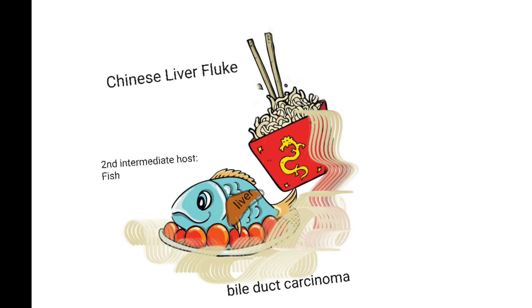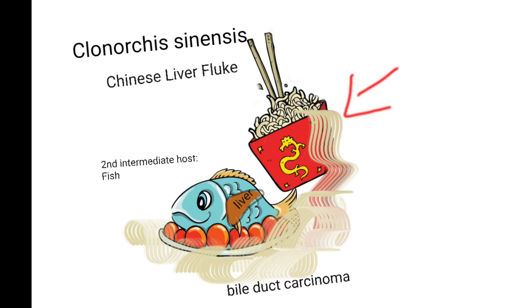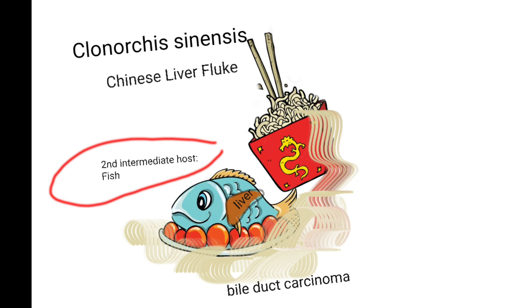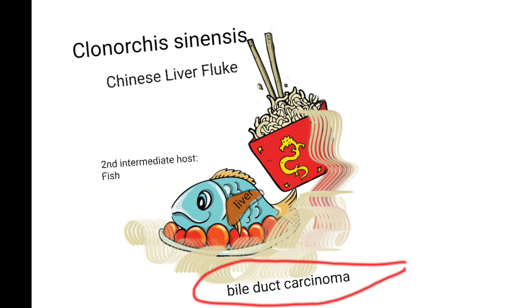The second one is Chinese liver fluke, also known as Clonorchis sinensis. The second intermediate host is fish, and it causes bile duct carcinoma — cholangiocarcinoma.